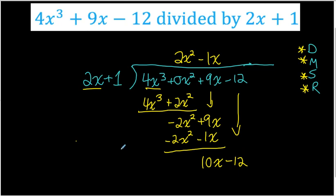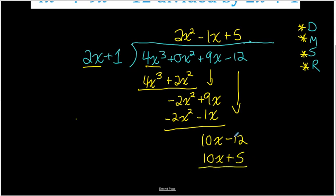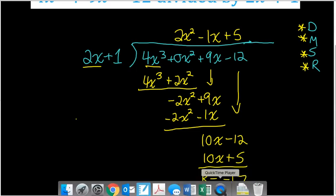Repeat one final time: divide 10x by 2x — 10 divided by 2 is 5, and x divided by x is 1 — so the last term in our quotient is 5. Multiply 5 by 2x plus 1: 5 times 2x is 10x, and 5 times 1 is 5. Do the last subtraction: negative 12 minus 5 is negative 17. Since there are no more terms to bring down, negative 17 is our remainder.